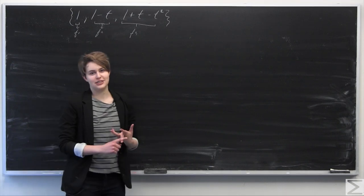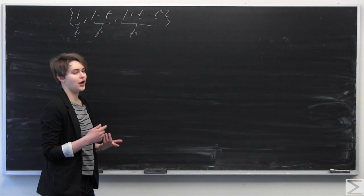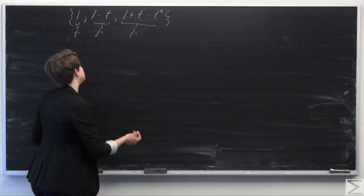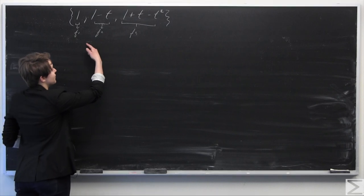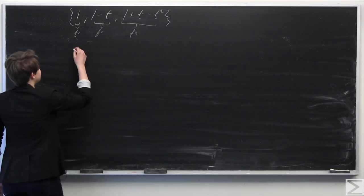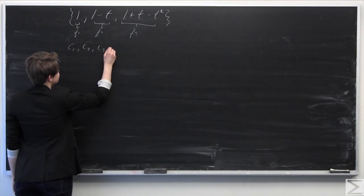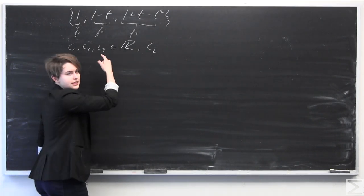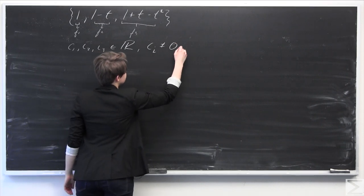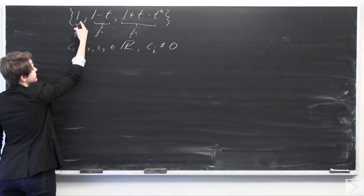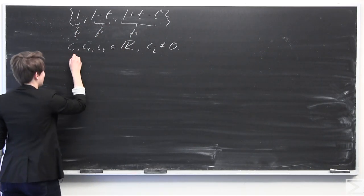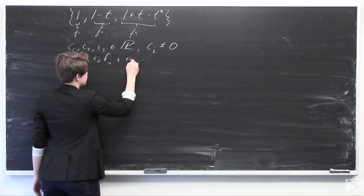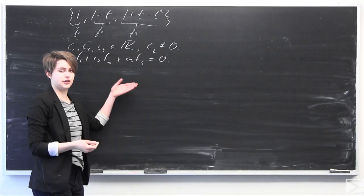There are two different ways to do this that I put in the solution transcript, so I will go over both ways. The first way we can prove that these functions are linearly independent is by contradiction. We assume that these three functions are linearly dependent. Therefore, there exist some c1, c2, and c3 in R, where the ci's are not all equal to 0, such that — calling these functions f1, f2, and f3 — we have c1 times f1 plus c2 times f2 plus c3 times f3 equals 0. This is the condition for linear dependence.